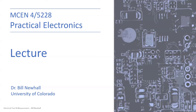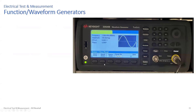Last class we were talking about test and measurement equipment, and we worked through the oscilloscope topics. Today we're going to continue talking about function generators, waveform generators, and data capture. I wanted to finish up this part of the class today because it's useful, when you walk into lab and see the equipment, to have an idea of what it's capable of instead of discovering after the fact that it could have helped you.